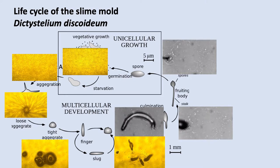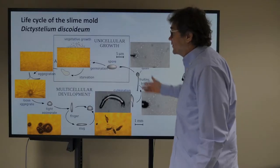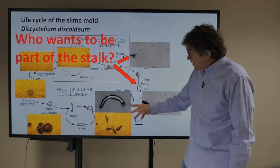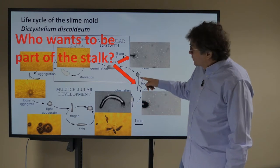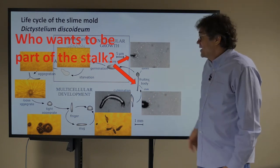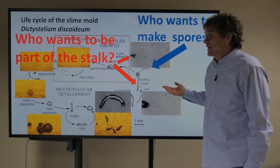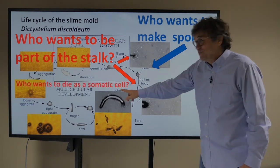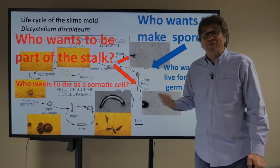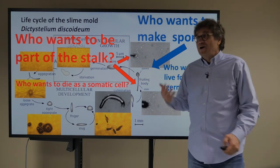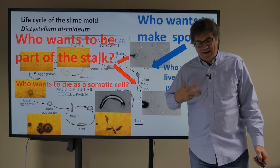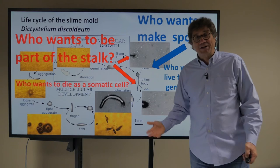We've talked about this life cycle of a slime mold, Dictyostelium discoideum. At the end of the life cycle, part of it forms a slug, part forms a stalk, and part forms a fruiting body. You can ask these cells: who wants to be a stalk, and who wants to be a spore? If you're a stalk, you die as a somatic cell. But who wants to live forever as germplasm? Some cells agree to be a stalk and die, and that's interesting because your somatic cells are all like the stalk — they're going to die — while your gametes are the ones that are potentially immortal.